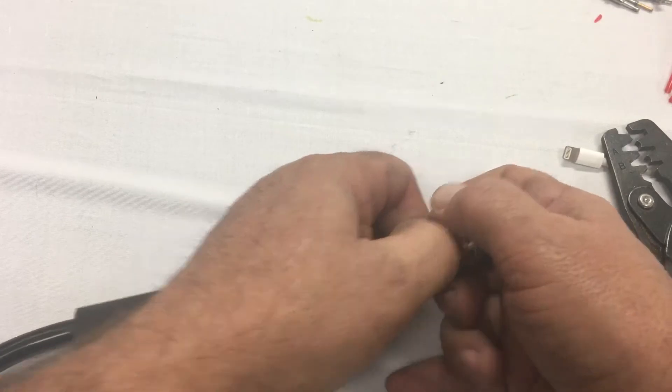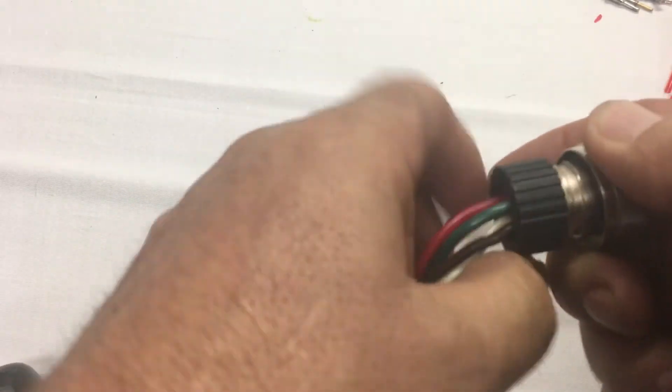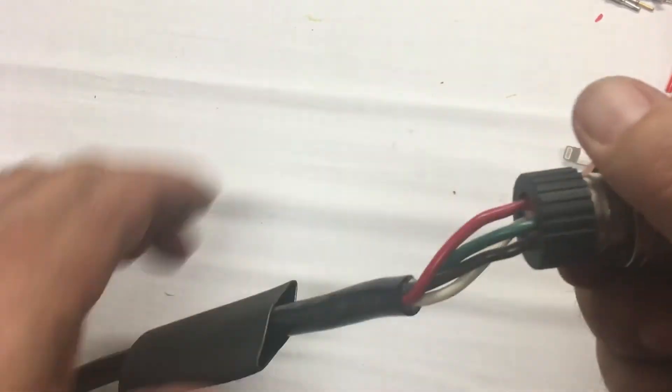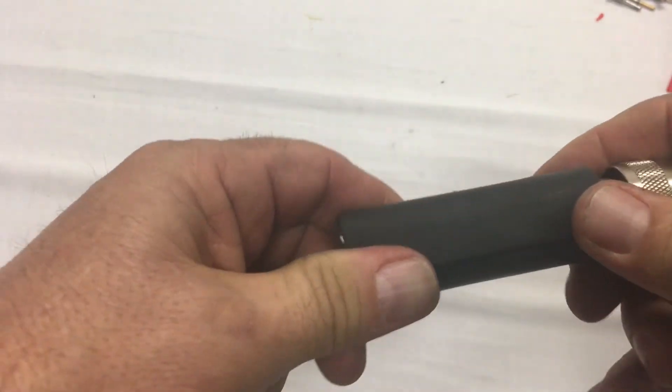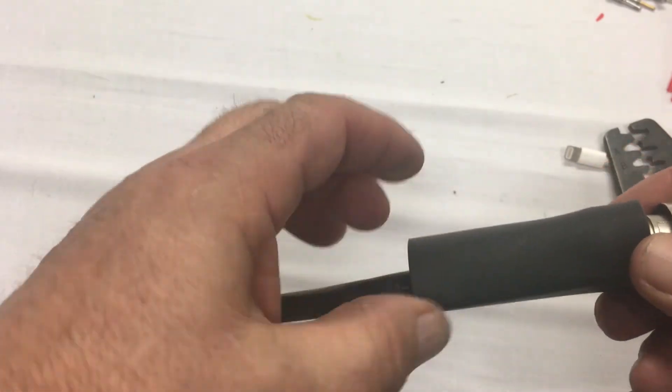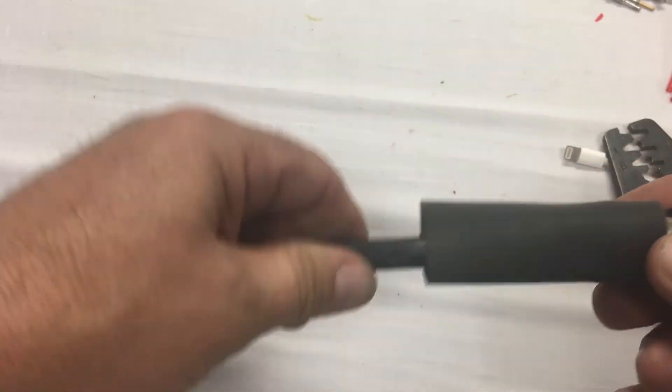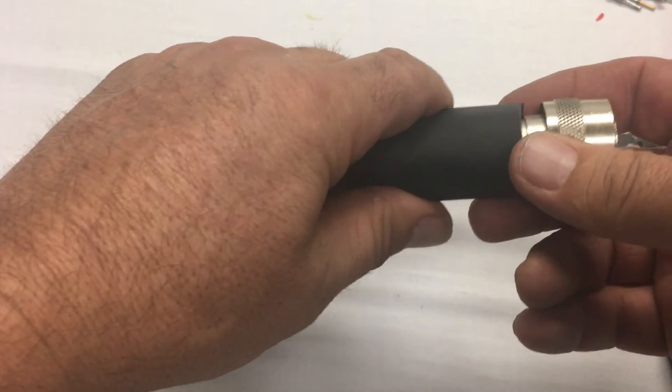And then all we want to do is just screw the collar on like so. Put our shrink tube up and over this. I've got a really highly reducing style here that shrinks down to maximum, so it'll grab onto the thing and we're done.